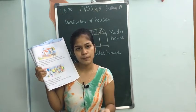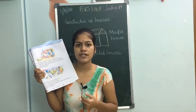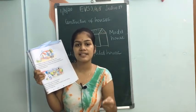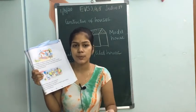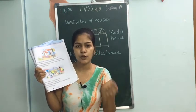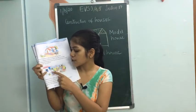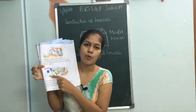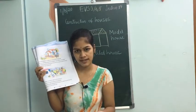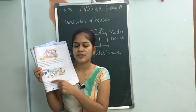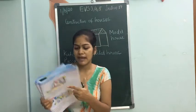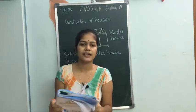You should grow plants around your house because it looks beautiful, plants give us fruits and vegetables, and it purifies the air. You should also always whitewash your house once in a year. So these are the things you should make sure of while constructing the house.